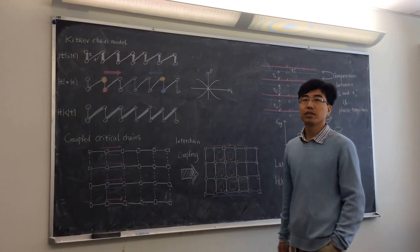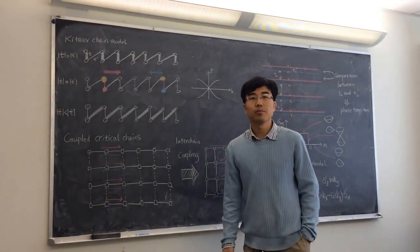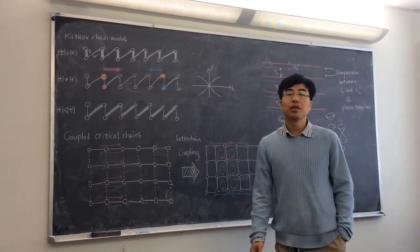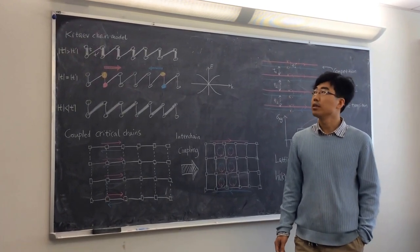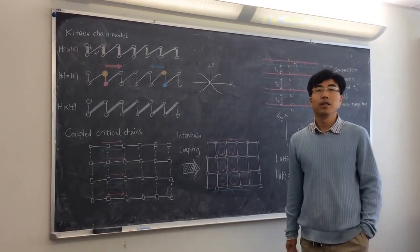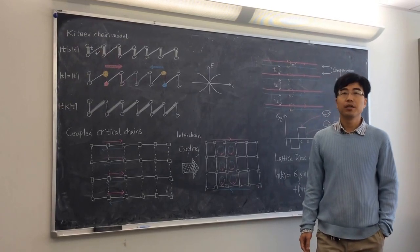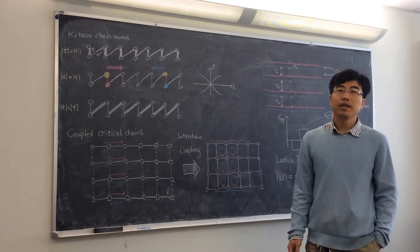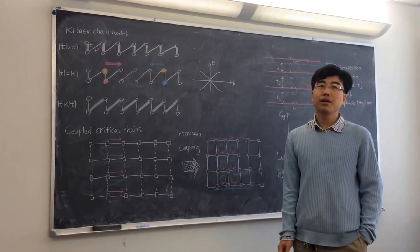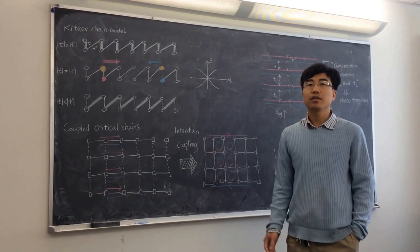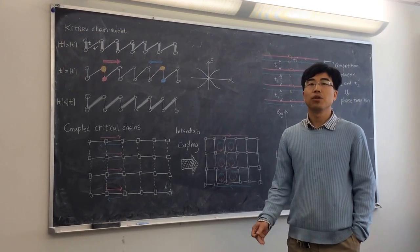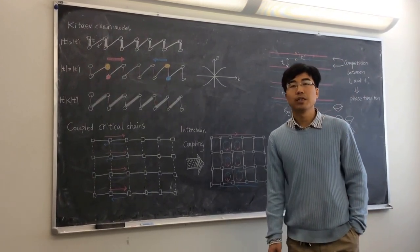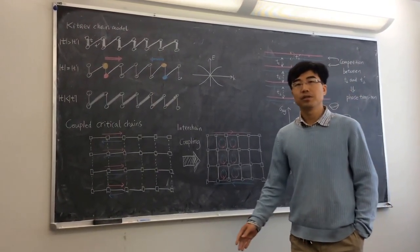In the previous classes of this course, you have mainly learned about two different topological states. One is the Kitaev chain and the other is the quantum Hall state, the integer quantum Hall state. You may wonder, are these two states completely unrelated to each other? And the answer is they are actually closely related. To see that, today let's start from the Kitaev chain and see how to construct a cousin of the quantum Hall state, which is called the quantum anomalous Hall state. That is also a prototype model that helps you to understand all the newer stories of topological insulators.